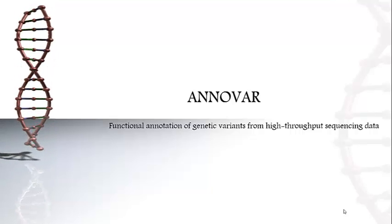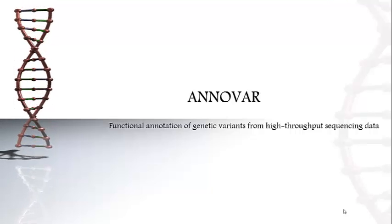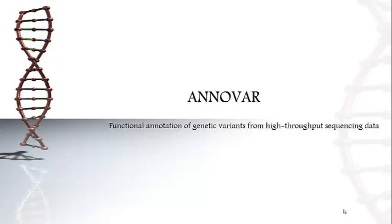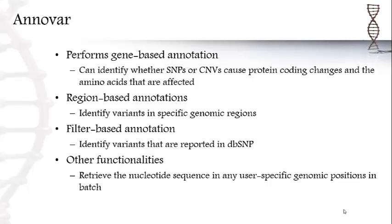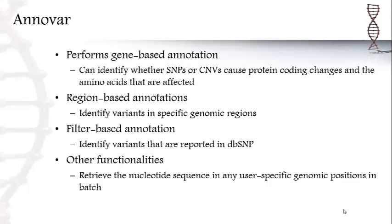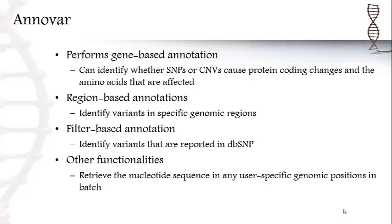ANOVA is the next tool we will look at. What ANOVA does is that it does a variety of things such as identifying what causes protein code changes, identifying variants in genomic regions, and it can also retrieve nucleotide sequences in specific genome positions.